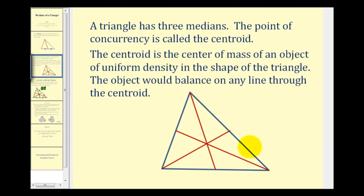Because each triangle has three vertices, every triangle also has three medians. And the point of concurrency of the three medians is called the centroid. So in this diagram, this point here is the centroid. It's the point where all three medians intersect.